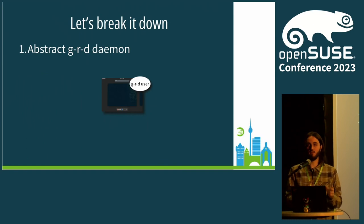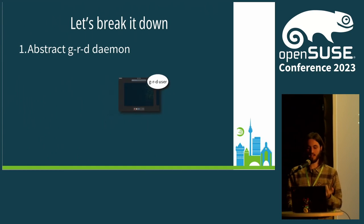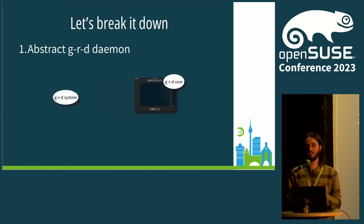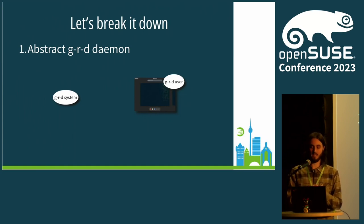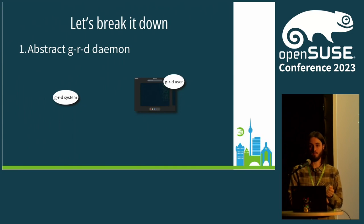What we currently have is the GNOME Remote Desktop daemon — I'm calling it the user daemon because it's running at the user session as a user service, and it's in charge of displaying remotely the user session. But we need a different behavior. So I've abstracted the user daemon and created a system daemon — the GNOME Remote Desktop system daemon. This one is not running at the user level but at the system level as a system service, and it's in charge of displaying greeter sessions like the login screens. It's running as a GDM user because it uses some GDM resources.